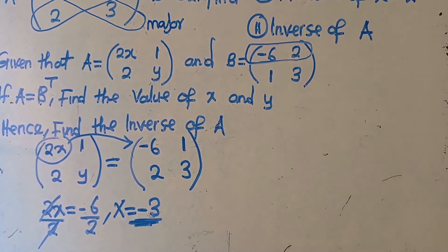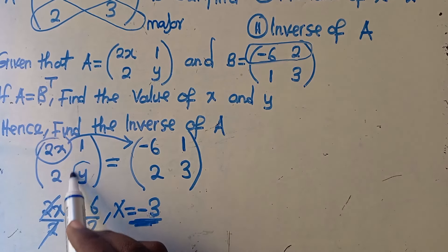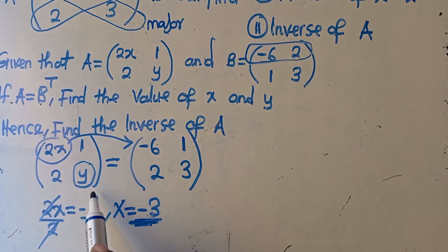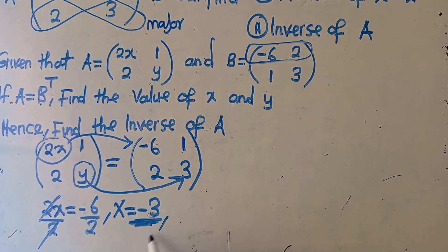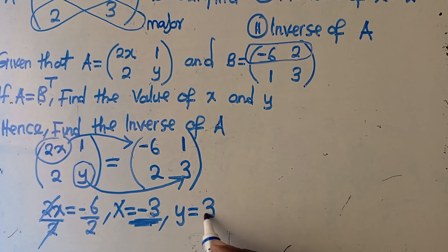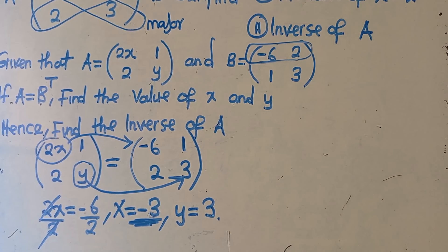The second entry gives us y equals 3 directly. So there is no need to solve much further on those. These are the values: x equals negative 3 and y equals 3. Then we are asked to find the inverse of A.